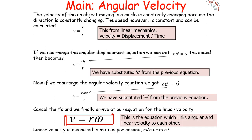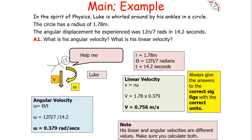We can also link this back to an equation for linear velocity. From linear mechanics, velocity equals displacement over time. From the angular displacement equation, displacement equals rθ. Since θ = ωt, substituting gives linear velocity v = rω — linear velocity equals angular velocity times the radius of the circle.